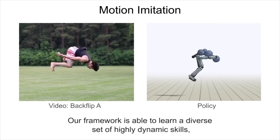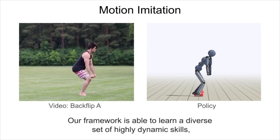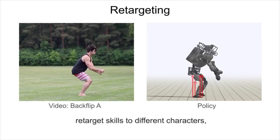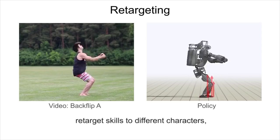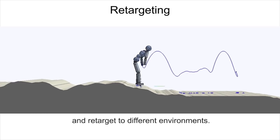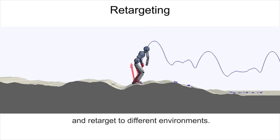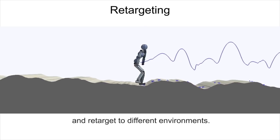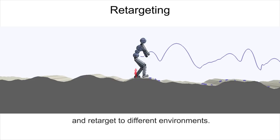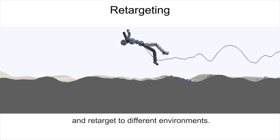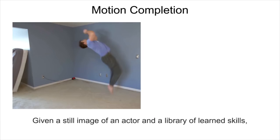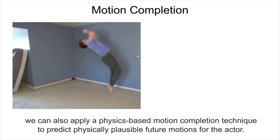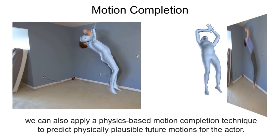Our framework is able to learn a diverse set of highly dynamic skills, retarget skills to different characters, and retarget to different environments. Given a still image of an actor and a library of learned skills, we can also apply a physics-based motion completion technique to predict physically plausible future motions for the actor.